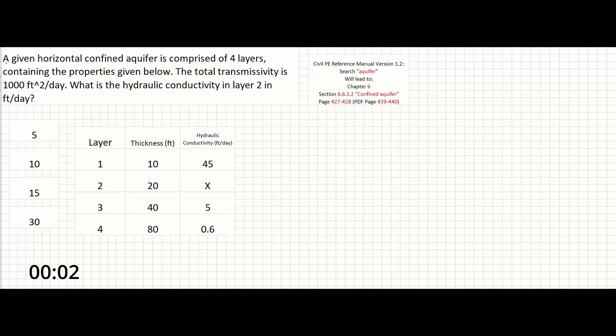In this problem, a given horizontal confined aquifer is comprised of four layers containing the properties given below. The total transmissivity is 1,000 feet squared per day. What is the hydraulic conductivity in layer 2 in feet per day?